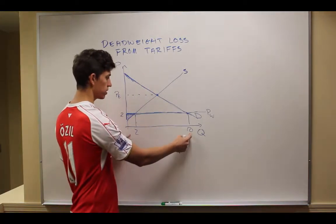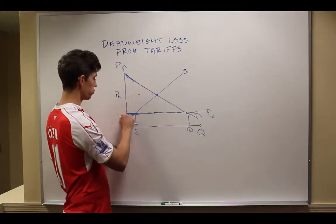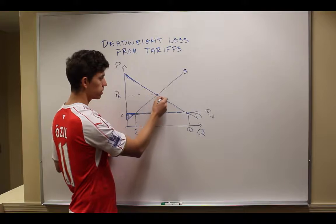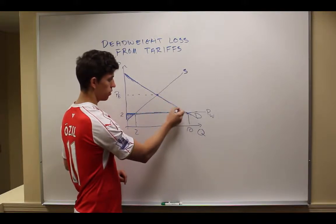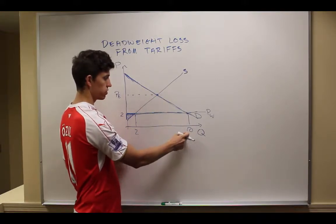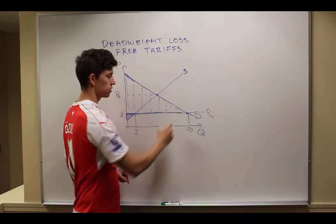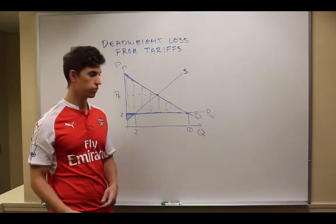They get to buy all 10 units at this price of $2, even though what this demand curve says is that they would have been willing to pay up here for all these earlier units. So this entire big area up here is the consumer surplus when they're engaged in free trade.